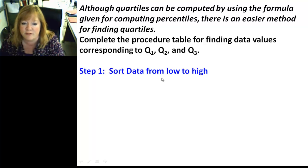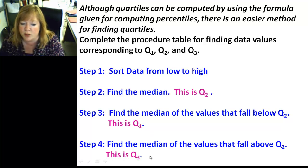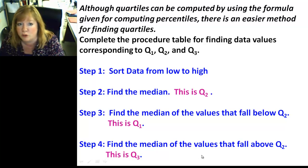Step 1, you sort the data from low to high. Step 2, find the median. That's the Q2. Once you have the Q2, you find the median of the values that fall below Q2, and that's Q1. And step 4, find the median of the values that fall above Q2. That's going to be Q3. All righty, so let's take a look.